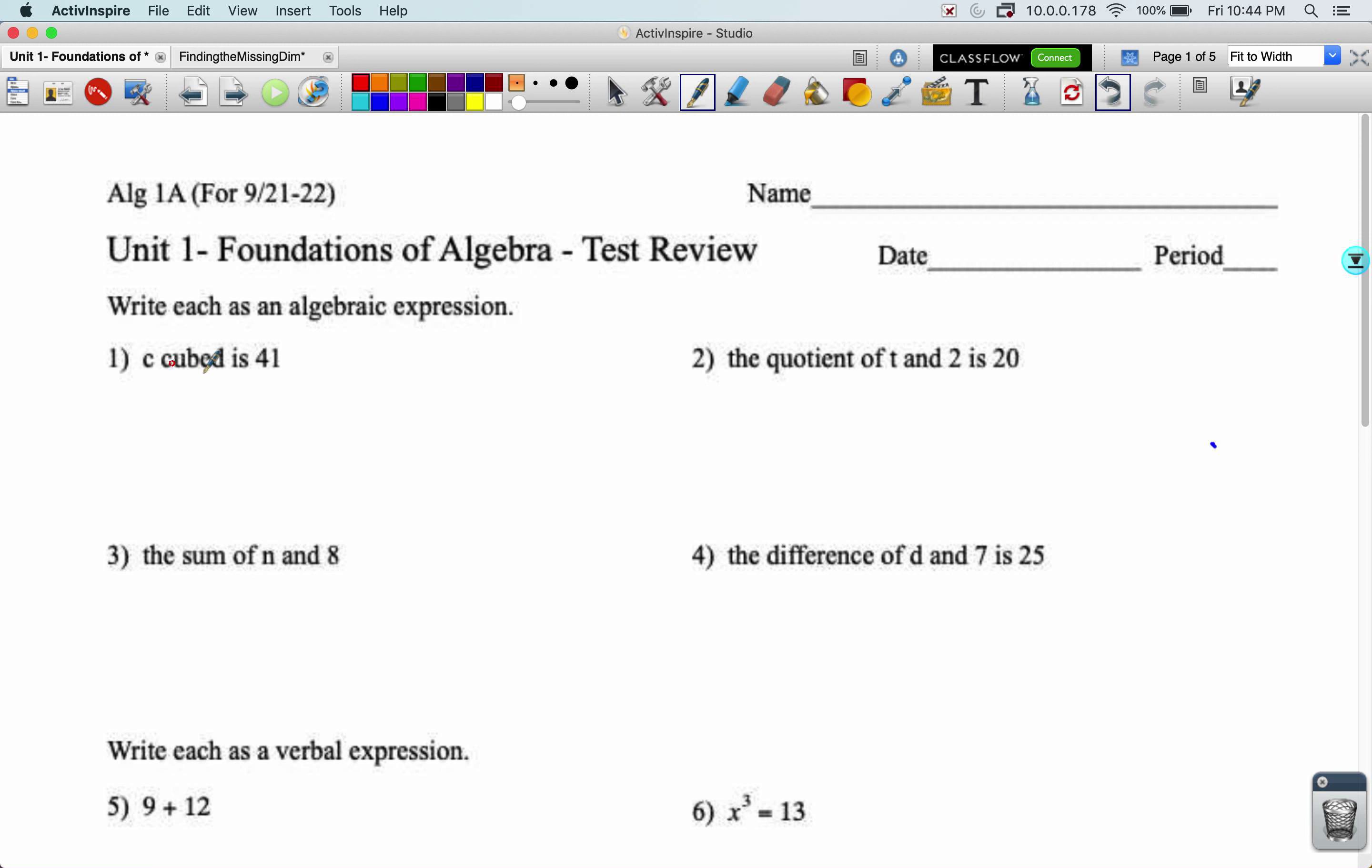Problem number one, c cubed is 41. So cubed, we just need to know that this means take whatever comes before it and raise it to the power of three. So c cubed is c to the power of three. And the word 'is' is going to become an equal sign. So c cubed is 41.